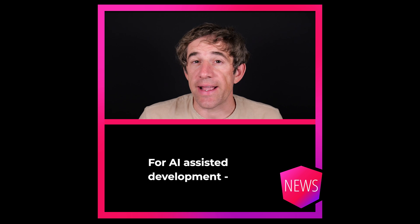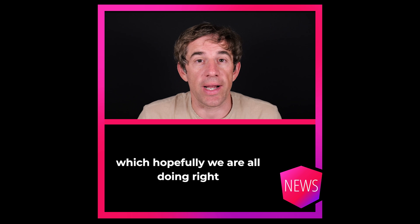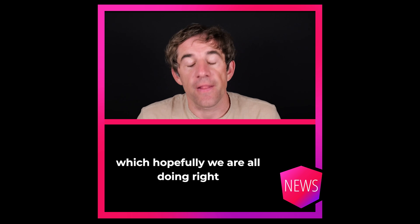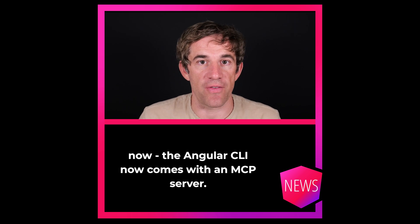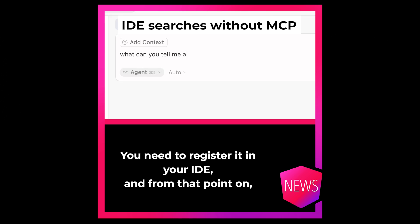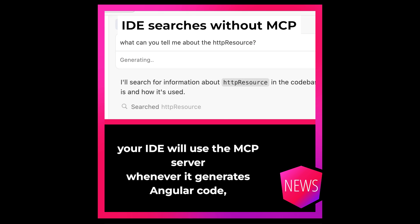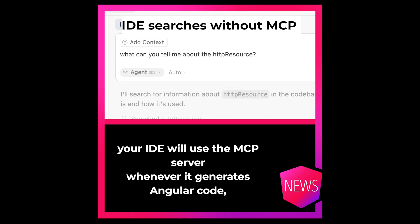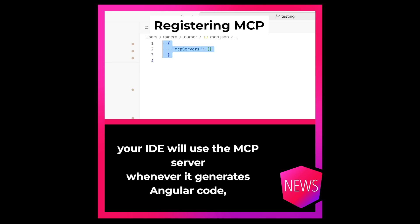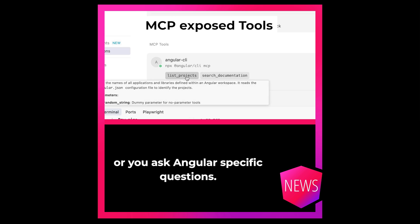For AI-assisted development, which hopefully we are all doing right now, the Angular CLI now comes with an MCP server. You need to register it in your IDE, and from that point on, your IDE will use the MCP server whenever it generates Angular code or you ask Angular-specific questions.